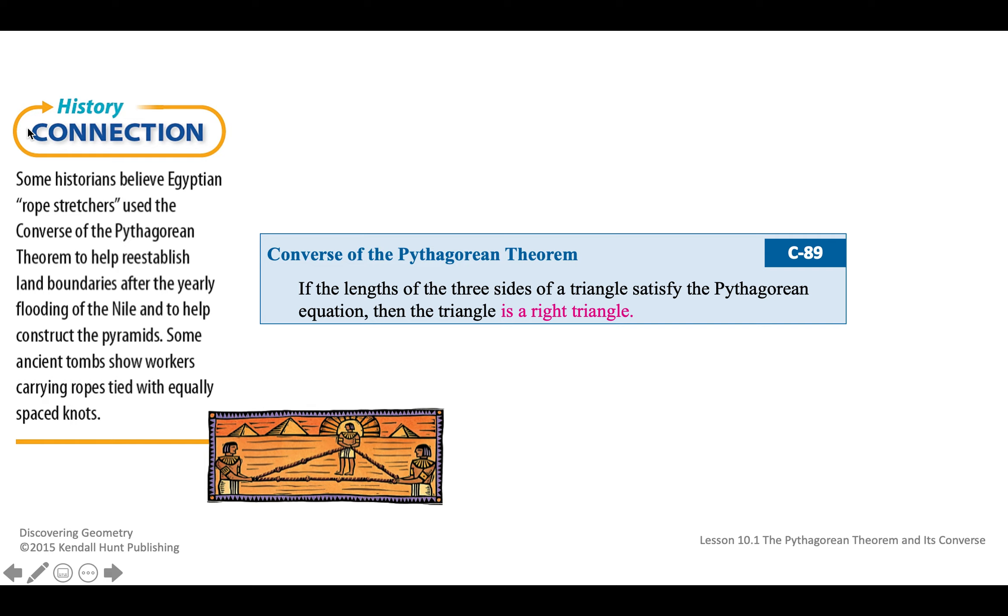Now, what is the converse of the Pythagorean Theorem? It's basically just kind of in the opposite direction of the Pythagorean Theorem. It says that if the lengths of the three sides of a triangle satisfy the Pythagorean equation, then you know it's a right triangle. So if you have three side lengths and A squared plus B squared equals C squared is true for those three side lengths of the triangle, you know it must be a right triangle.